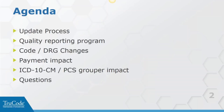Let's not waste any more time. Let's look at the agenda. We're going to talk about the update process for both the DRGs and the codes. We're going to talk just a little bit about the quality reporting program, only because it does impact our reimbursement. We're going to talk about some codes and some DRG changes and the payment impact, which will be included as we're talking about the changes - with the ICD-10 CM and PCS grouper. And then any questions, we'll have hopefully time at the end.